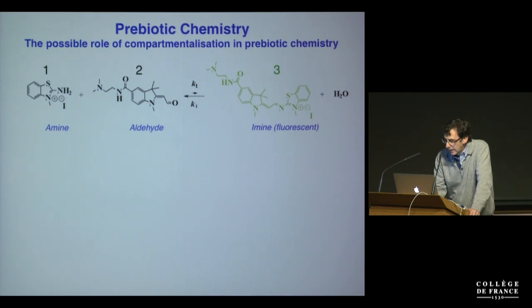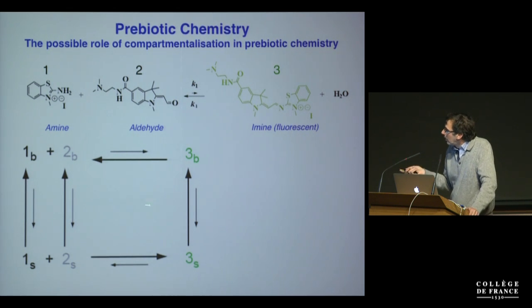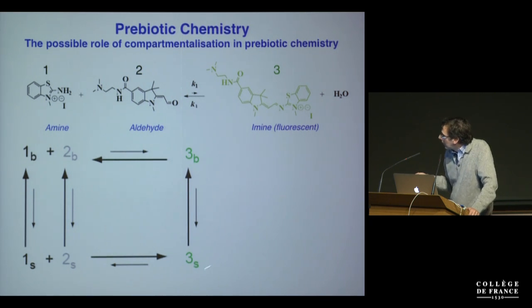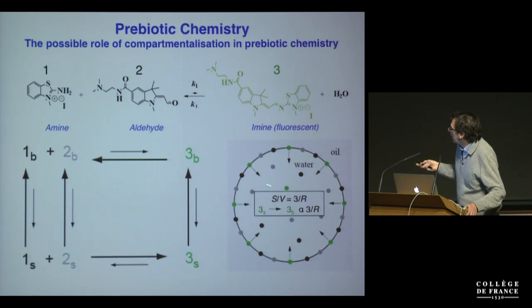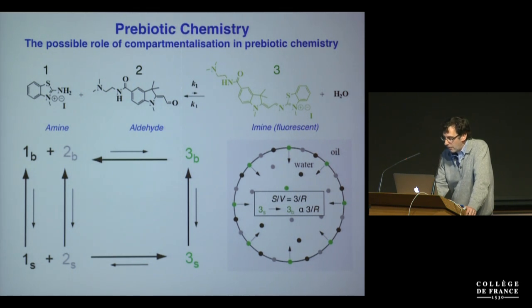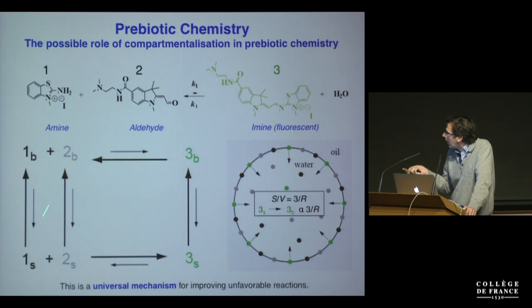In bulk the reaction is unfavorable, but with droplets you have the free amine and aldehyde bind with low affinity at the interface. At the interface they're no longer in a three-dimensional space — they're in a quasi-two-dimensional space, so the synthetic reaction is more efficient. You get formation of the product, which then diffuses back into the bulk. What you have is a continual flux of fluorescent product back into the droplet, giving the 1-over-R relationship because the surface-to-volume ratio equals 3/R.